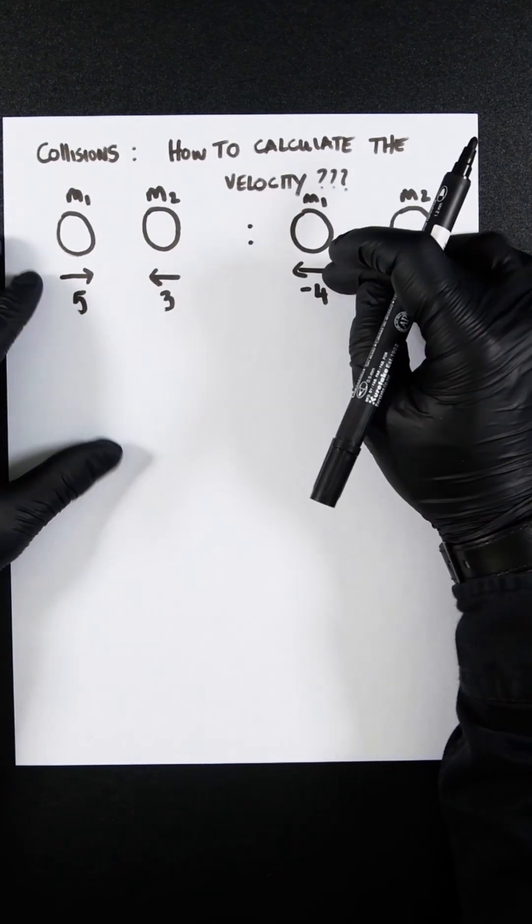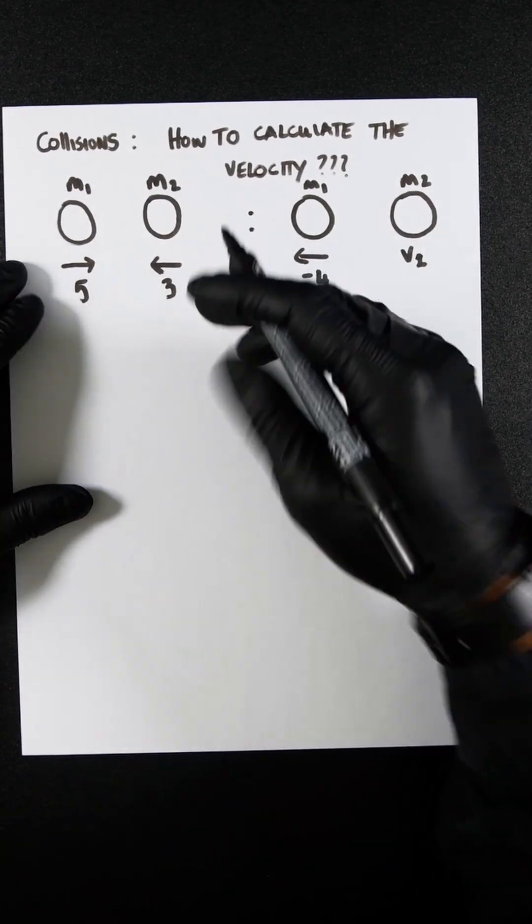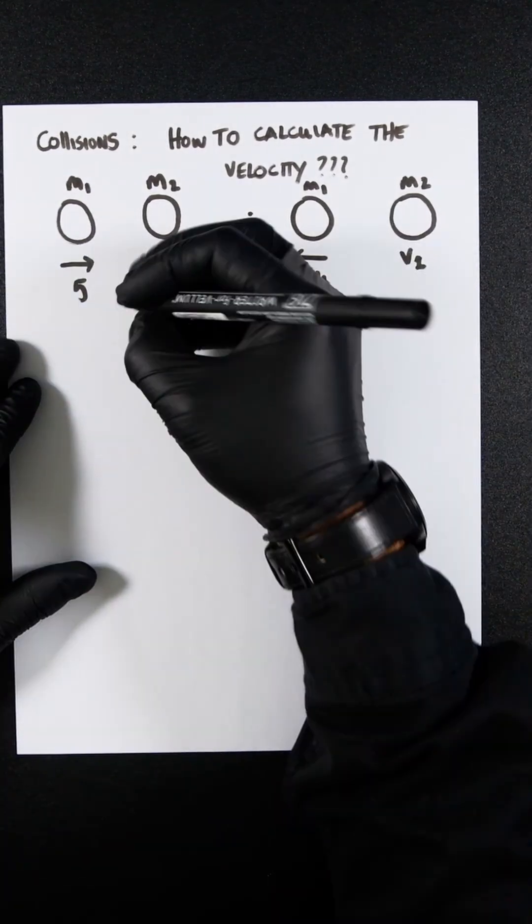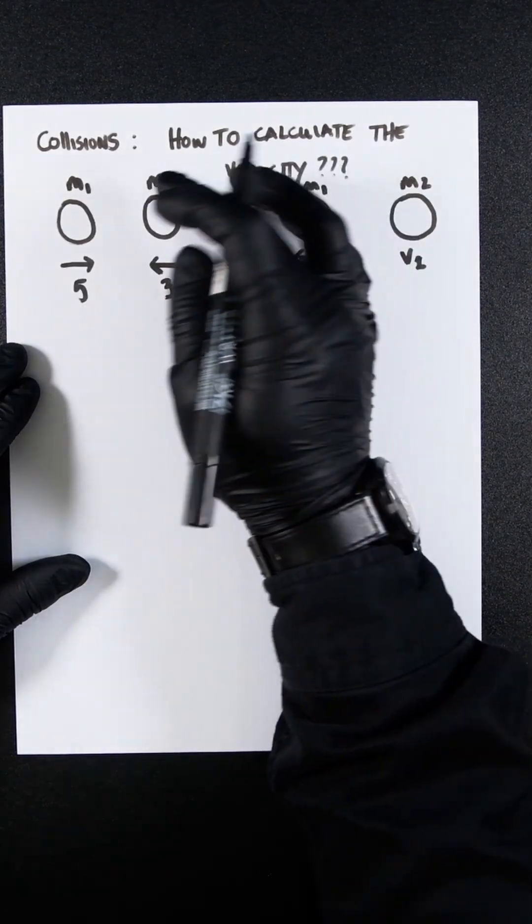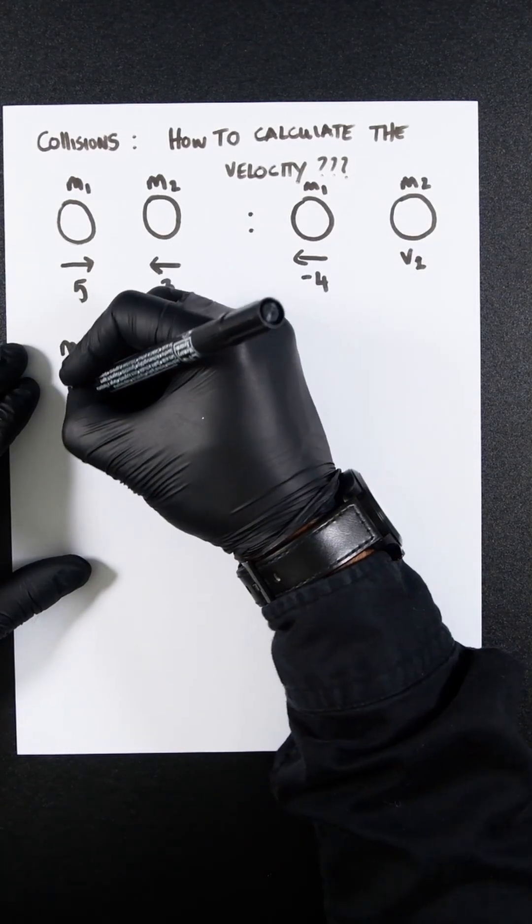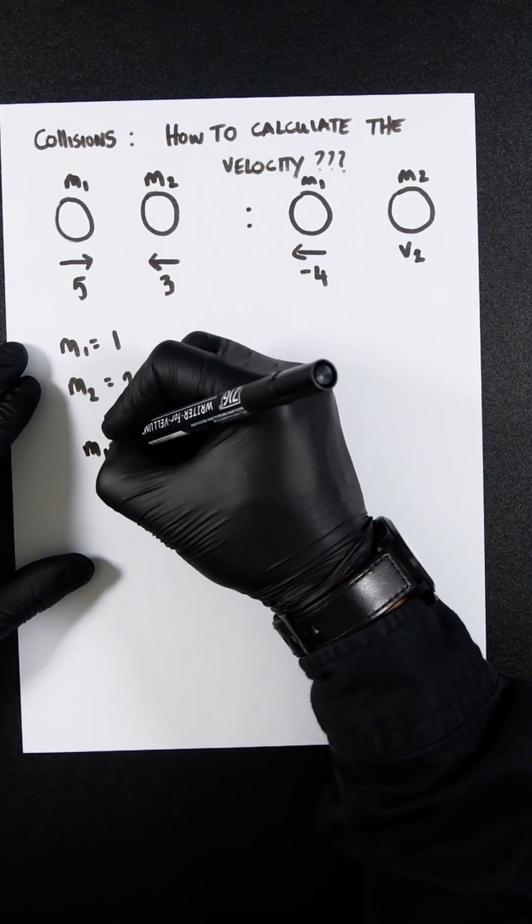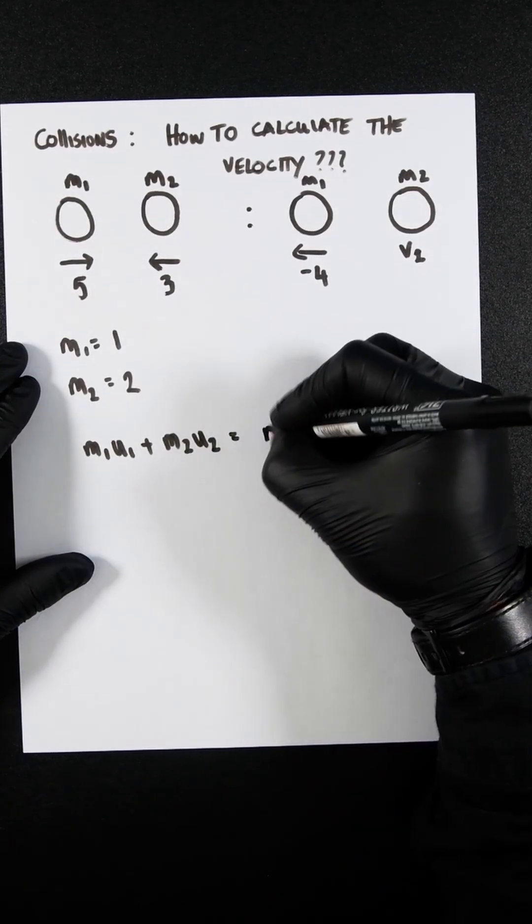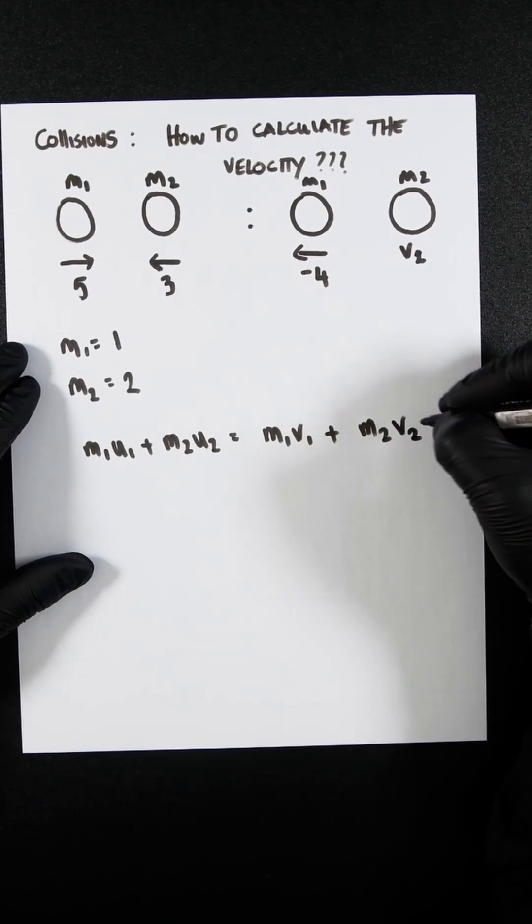And then after the collision, this one is going left instead of right. As energy is always conserved, what happens before and after is equal, so we're going to do the mass times the velocity plus the mass times the velocity. M1 is going to be 1 kilo and M2 is going to be 2 kilos.